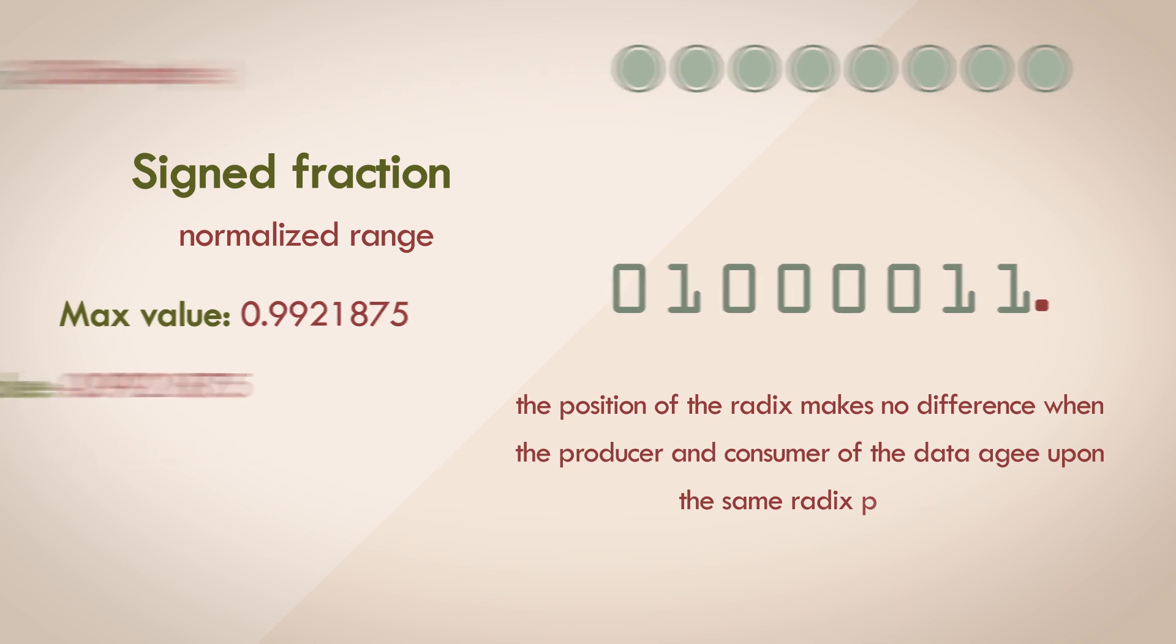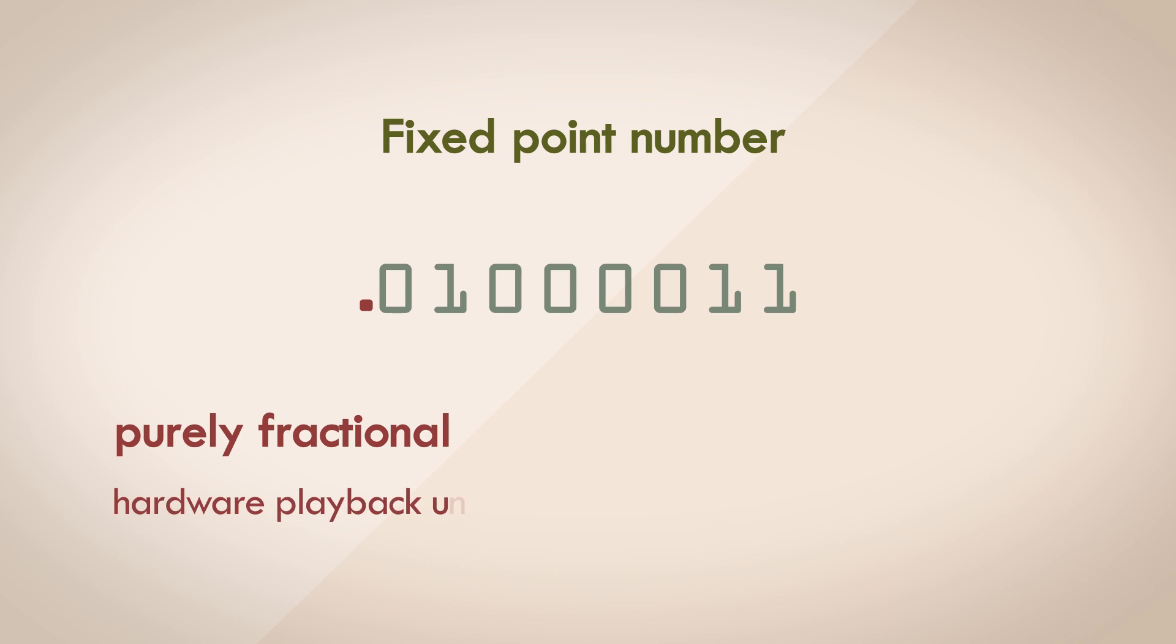But we can generalize a number with a specified radix position as being a fixed point number. The fixed point here is the binary point, which separates the whole part from the fractional part. Generally speaking, the binary point is either to the left of the MSB, where the number is purely fractional. This sort of representation is quite commonly used in hardware playback units and rudimentary DSP converters.